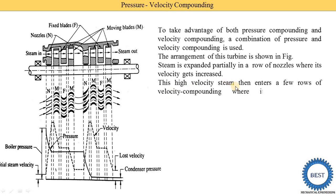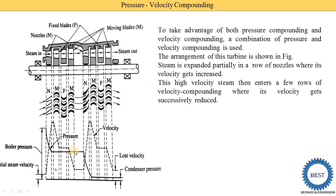This high velocity steam coming out from the nozzle then enters the velocity compounding. Why is it called velocity compounding? Because here fixed blades are used instead of nozzles. If we used nozzles here it would be called pressure compounding. In these moving plates — the velocity compounding — the velocity is successively reduced. Steam coming out from the nozzle with high velocity enters the moving plates where pressure is constant and velocity is reduced. Then it enters the fixed plate where both parameters are unchanged — velocity is as it is, pressure is as it is. Then it enters the second moving plates, where velocity is further reduced and pressure remains constant.